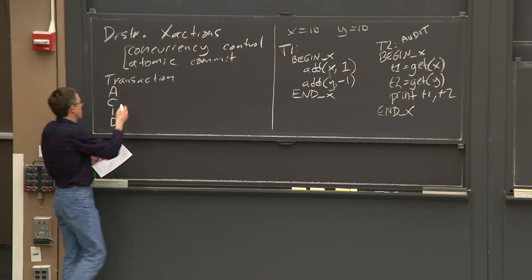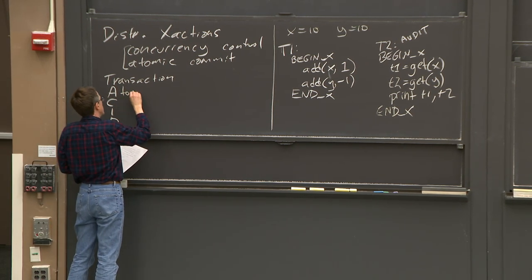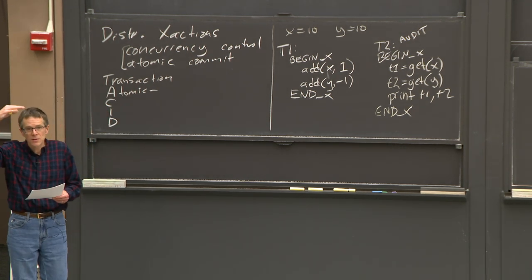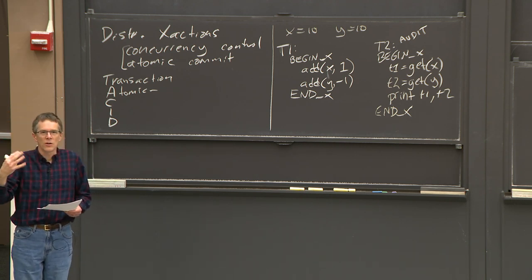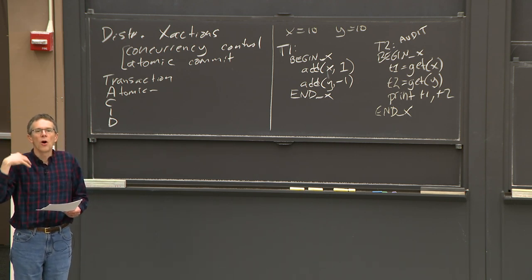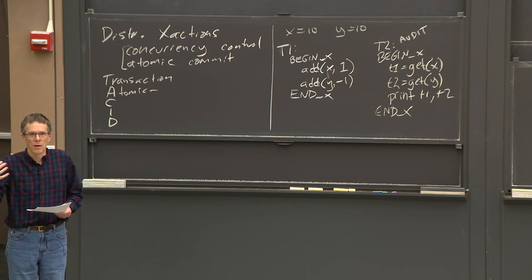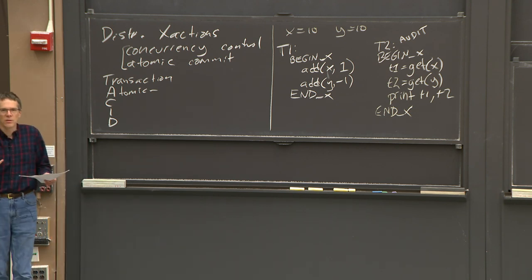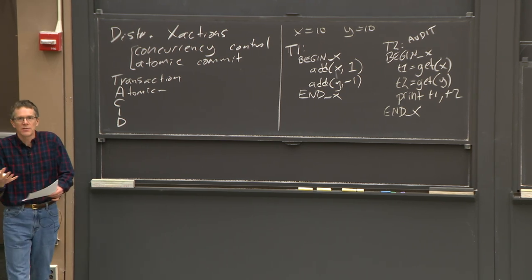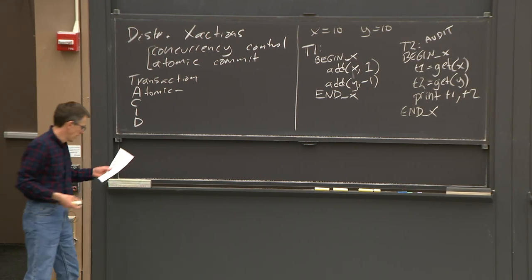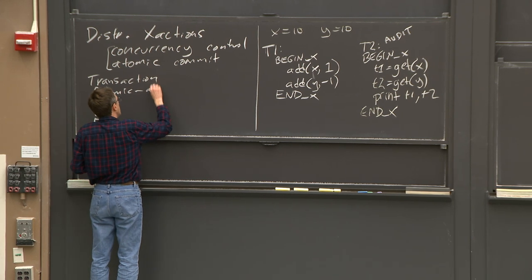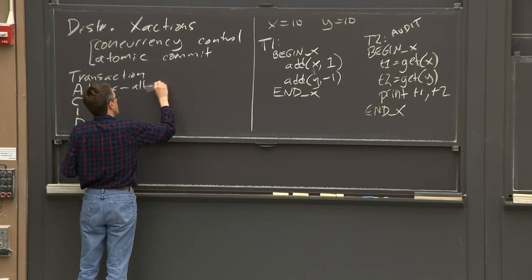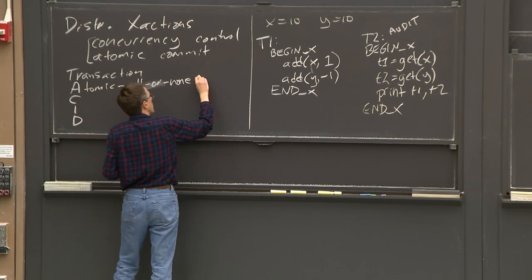ACID stands for Atomic, Consistent, Isolated, and Durable. Atomic means that a transaction with multiple steps — maybe writing multiple records — should either have all of its writes done or none of them despite failures. It shouldn't be the case that a failure in the middle of a transaction leaves half the updates completed and half never done. It's all or nothing despite failures.